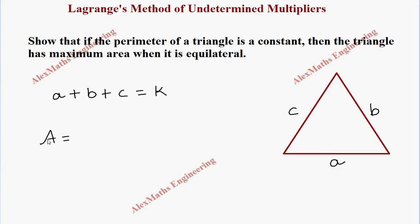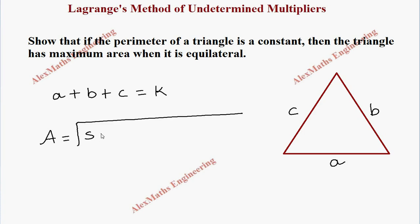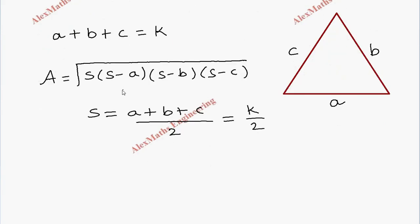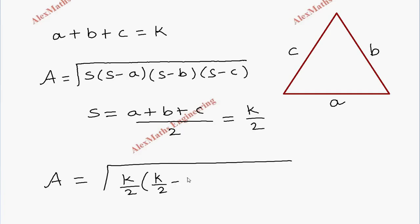The formula for area of a triangle is the square root of S times (S minus A) times (S minus B) times (S minus C), where S is the semi-perimeter, that is A plus B plus C divided by 2. Since we have taken A plus B plus C as K, S equals K by 2. Substituting, the area becomes the square root of (K/2) times (K/2 minus A) times (K/2 minus B) times (K/2 minus C).